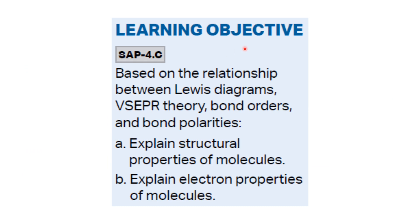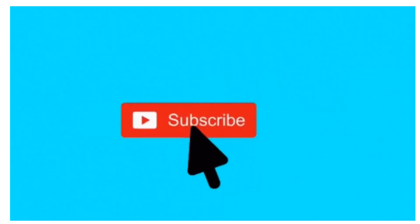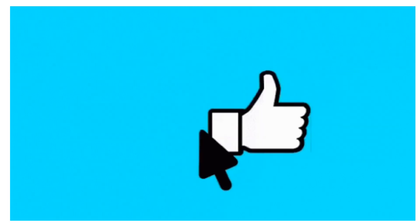The learning objective was based on the relationship between Lewis diagrams, VSEPR theory, bond orders, and bond polarities to explain structural and electron properties of molecules. In part one, VSEPR theory and Lewis diagrams were used to predict molecular geometry. In this part, electron distribution and hybridization were discussed to explain how geometry arises. Please like and subscribe to the channel and press the bell icon.